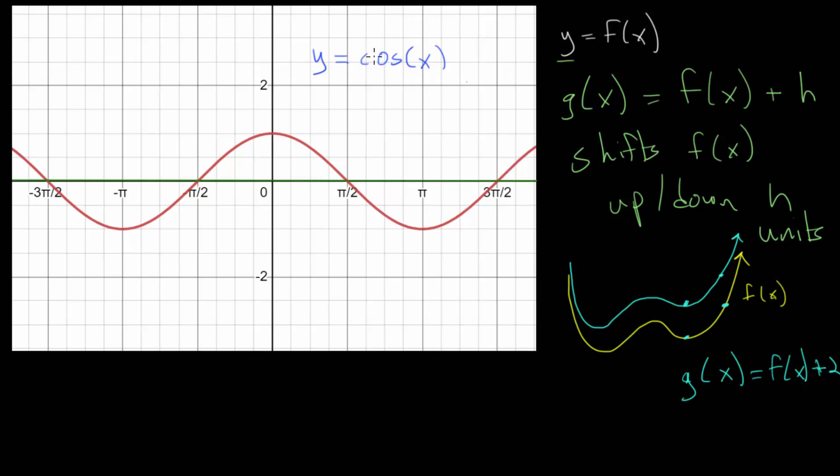So with our sinusoidal function, you can imagine right now that we have this function, cosine of x, and you can imagine that we are essentially adding nothing to that, which is why the parent function for the cosine or the sine function has a midline value of just y equals zero. This is our midline, the equation of our midline.